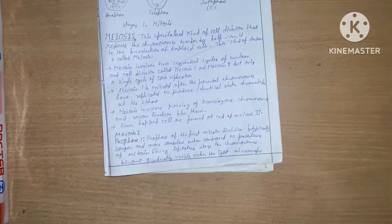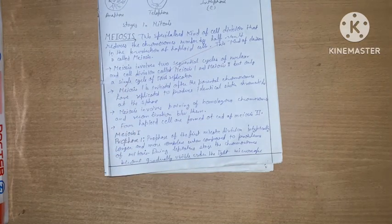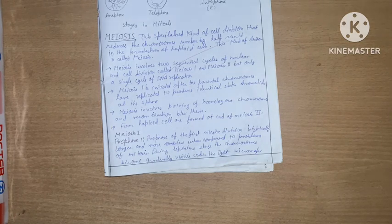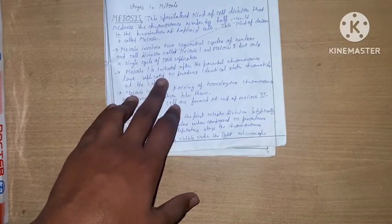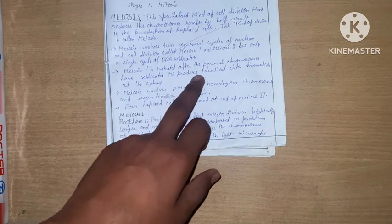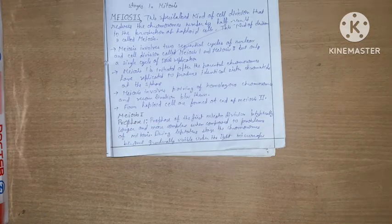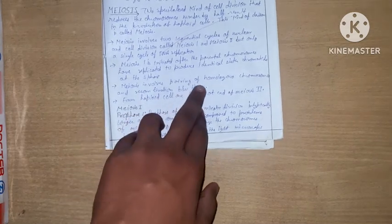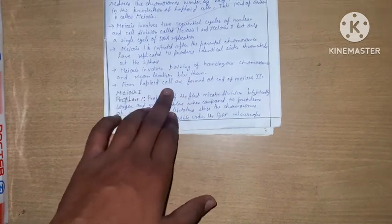Meiosis involves two sequential cycles of nuclear and cell division called meiosis I and meiosis II, but only a single cycle of DNA replication. Meiosis is initiated after the parental chromosomes have replicated, producing identical sister chromatids. Meiosis involves pairing of homologous chromosomes and recombination between them. Four haploid cells are formed at the end of meiosis II.